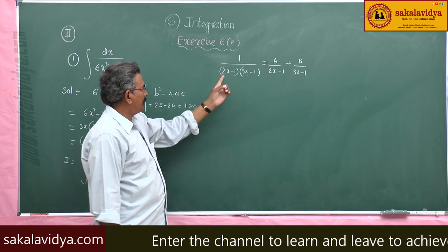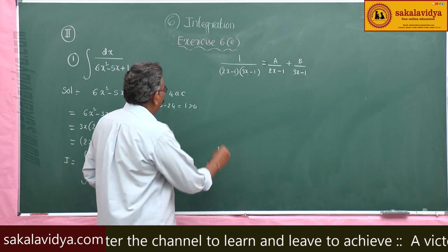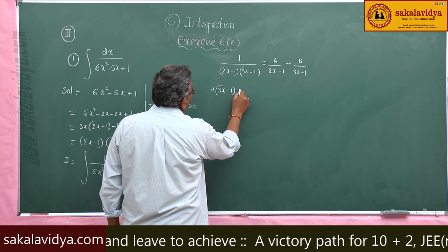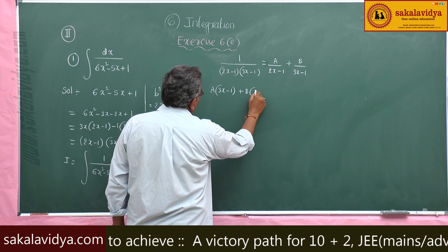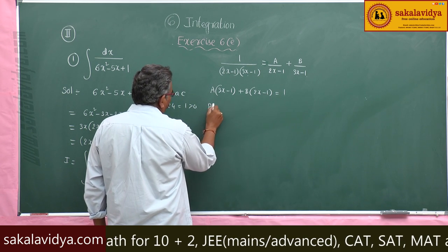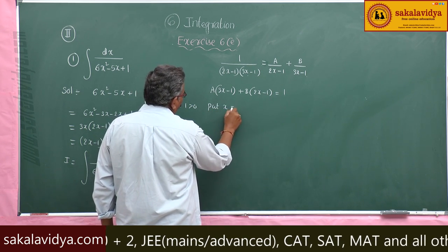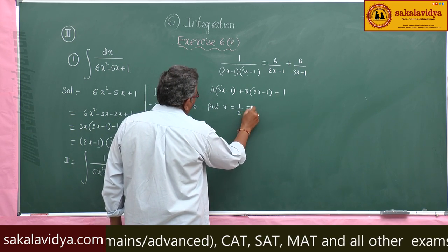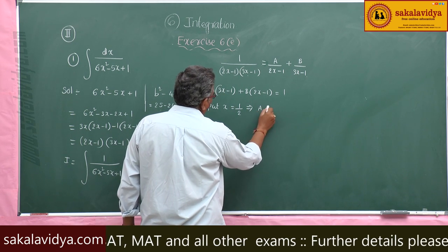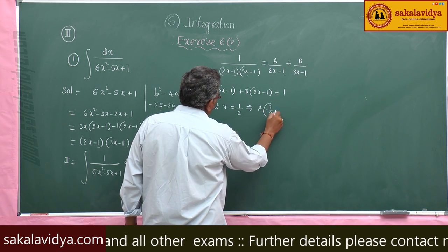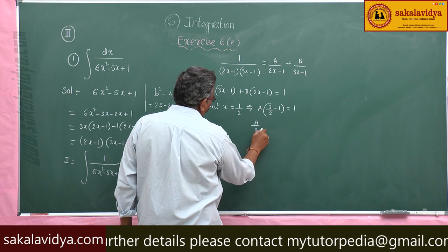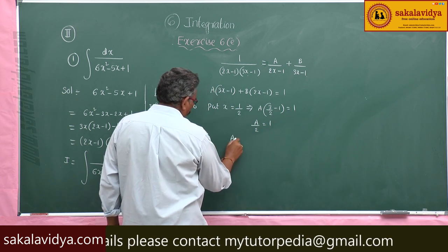Multiply both sides with (2x - 1)(3x - 1): A(3x - 1) + B(2x - 1) = 1. Put x = 1/2: this makes the B term zero. A(3/2 - 1) = 1, so A·(1/2) = 1. Therefore A = 2.